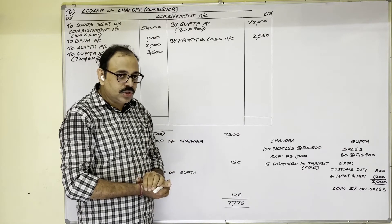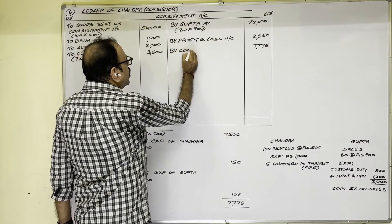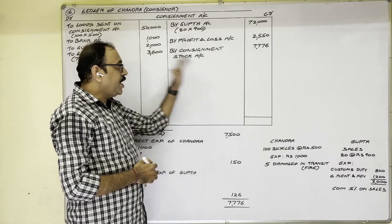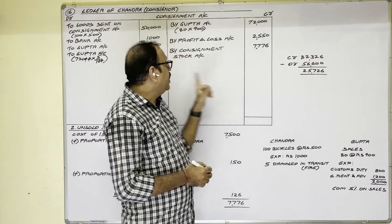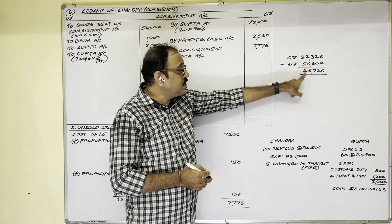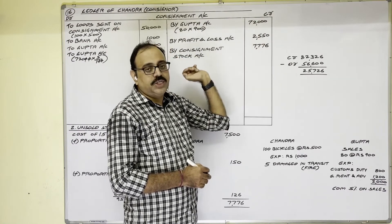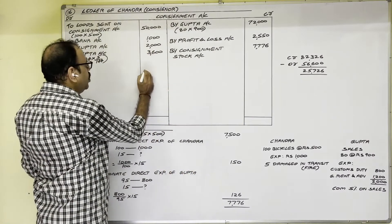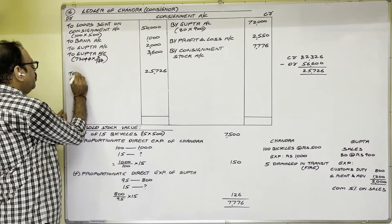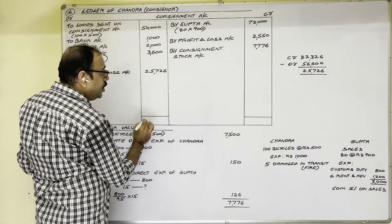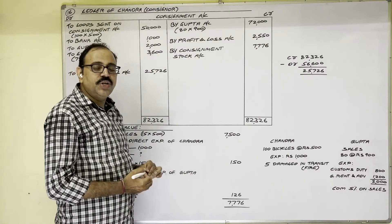In the consignment account, By Consignment Stock Account = 7776 rupees. Now to find profit or loss: credit column total is 82,326 rupees; debit column total is 56,600 rupees; the difference of 25,726 rupees is profit, because income total exceeds expenditure total. This profit is shown on the debit side and transferred to Profit and Loss Account. Both sides then total to 82,326 rupees. This completes problem 16. I hope this video is helpful to you. Thank you.